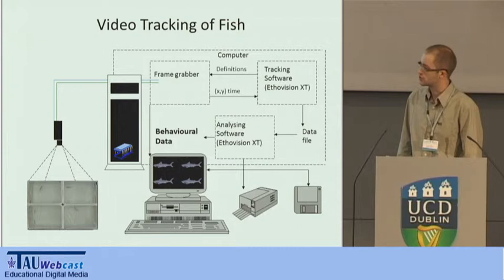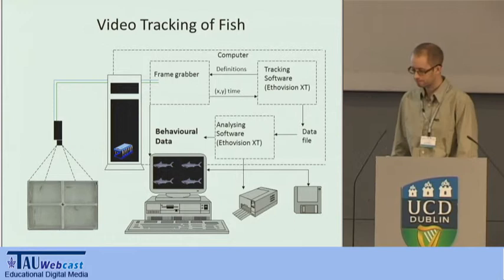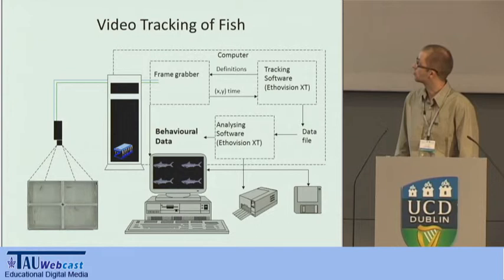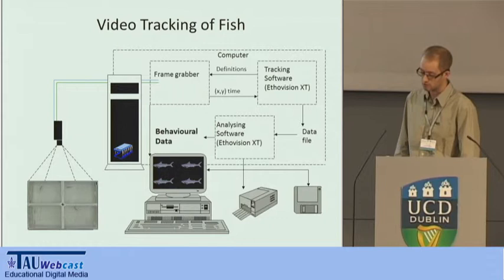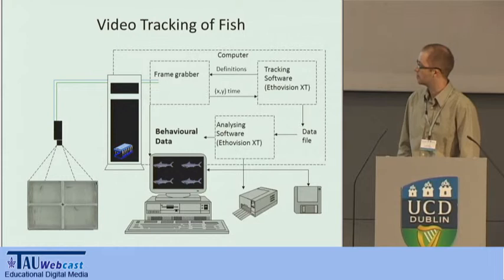We have a series of floor-mounted boxes where individual fish are put into chambers and allowed to acclimate to the conditions — left undisturbed for a number of hours. Above these boxes, we have ceiling-mounted video cameras. The tracking software — EtherVision — detects the position of the fish six times a second based on the contrast of the fish to its background, recording the position as a series of XY coordinates. From this positional data, we can look at parameters such as the speed of various movements and the total distance moved by the animal.